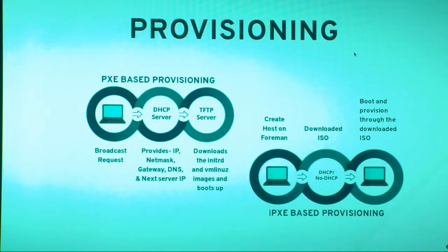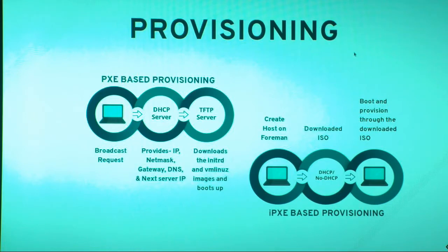We will see in what scenarios Foreman can perform provisioning. First is PXE-based. Foreman can do PXE-based provisioning — if you have DHCP and TFTP servers available, the machine sends a request to the DHCP server, which provides an IP address and the address of the TFTP server. The TFTP server provides initrd and vmlinuz to help it boot. For iPXE provisioning, you have a host already registered on Foreman, take a snapshot as an ISO, and use that ISO to provision other machines.